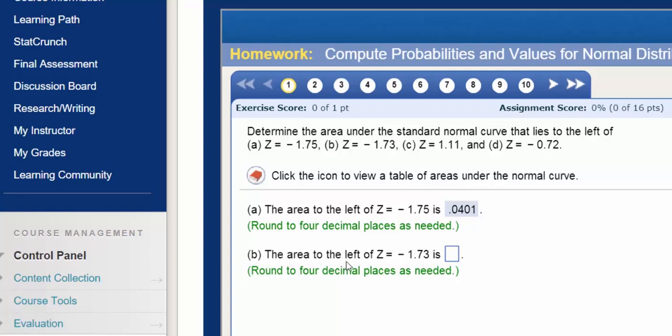So, for example, let's find the area to the left of z equals negative 1.73 using StatCrunch.